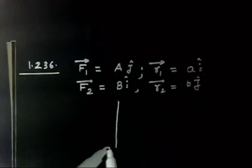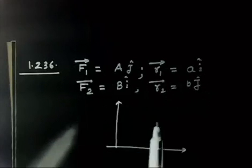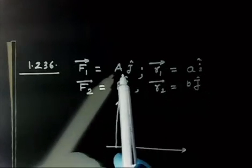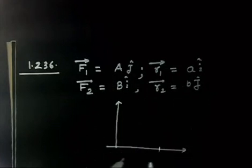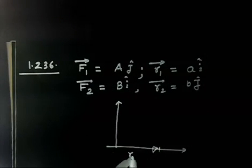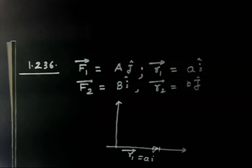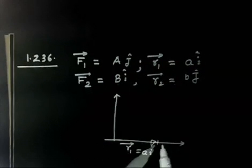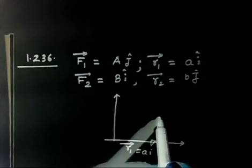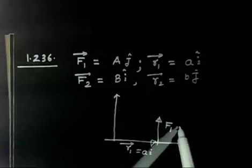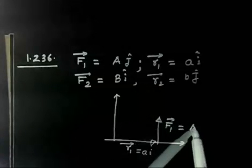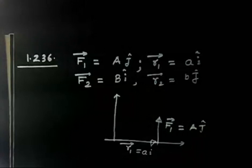Let me make a sketch. You have F1 acting along AJ. R1 is AI, so AI is this distance along the x-axis. If A is positive, this is the vector AI, so R1 is simply AI. Now there is a force AJ acting along the Z direction — that is F1, which is AJ.